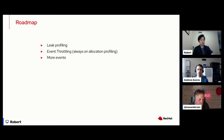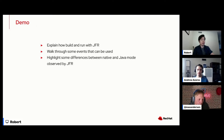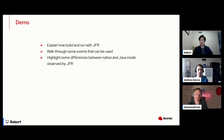On the roadmap: high-level events, event throttling, and Red Hat is also helping contribute leak profiling. Now jumping into a quick demo.